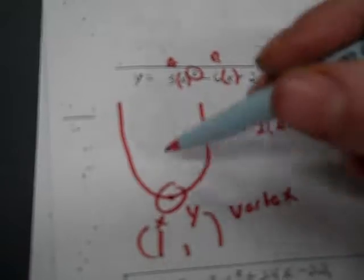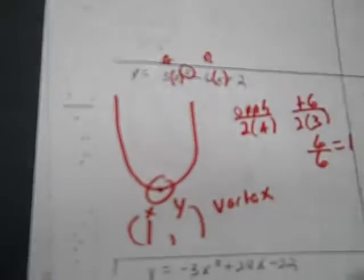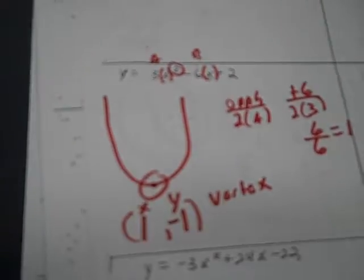To find y, replace all of the x's with 1. So I've got 3 times 1 to the second power, minus 6 times 1, plus 2 — and I get negative 1. So the vertex is (1, negative 1). That's what I want you to do.